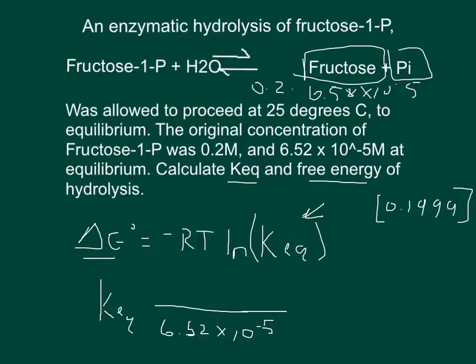And so that's also going to be the same as the amount of inorganic phosphate. So the top of our KEQ equation is going to be 0.1999, that's the amount of fructose, times 0.1999 is the amount of inorganic phosphate. So it's just 0.199 squared.